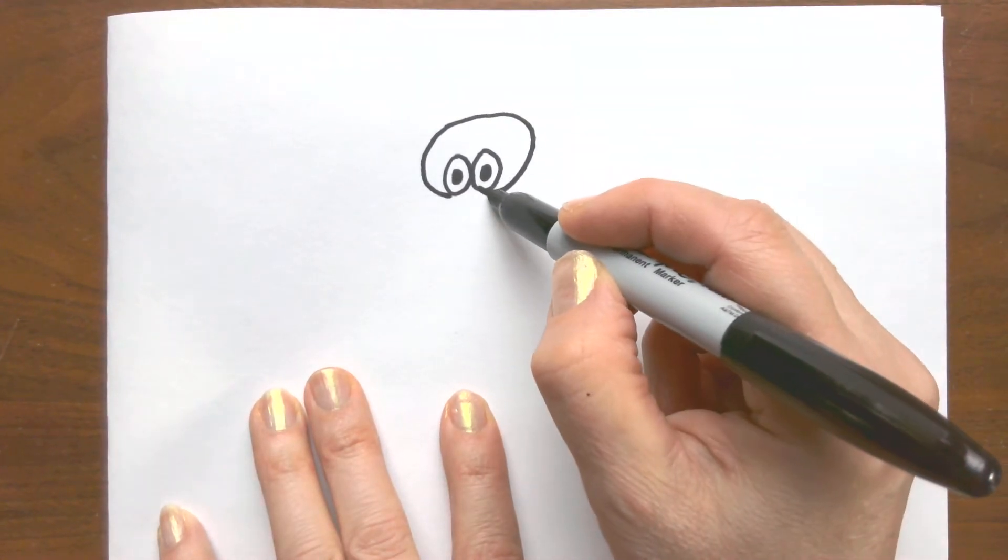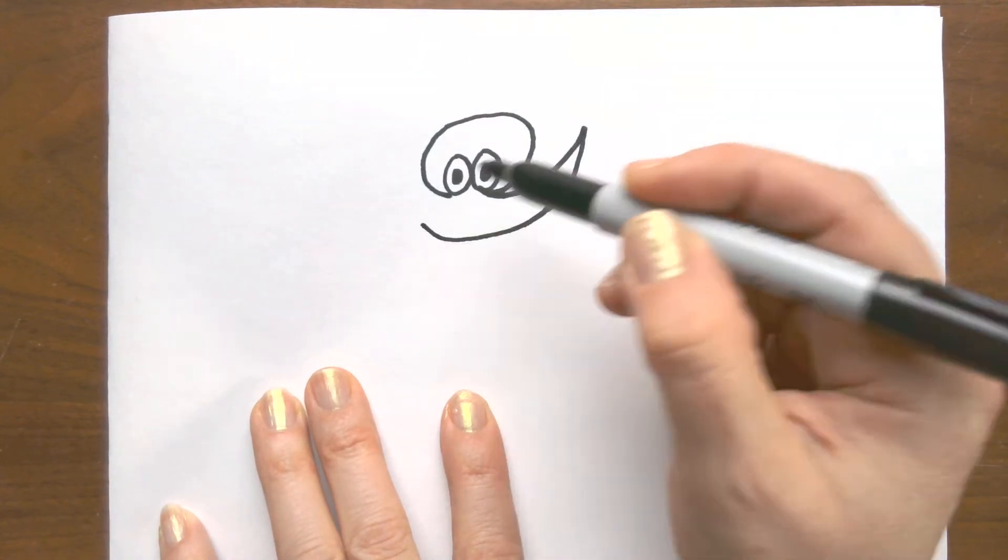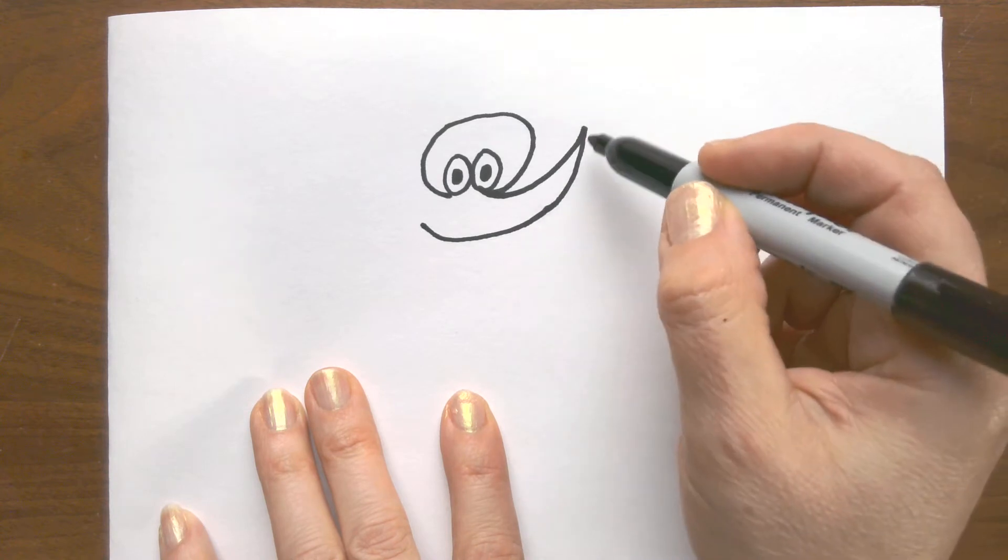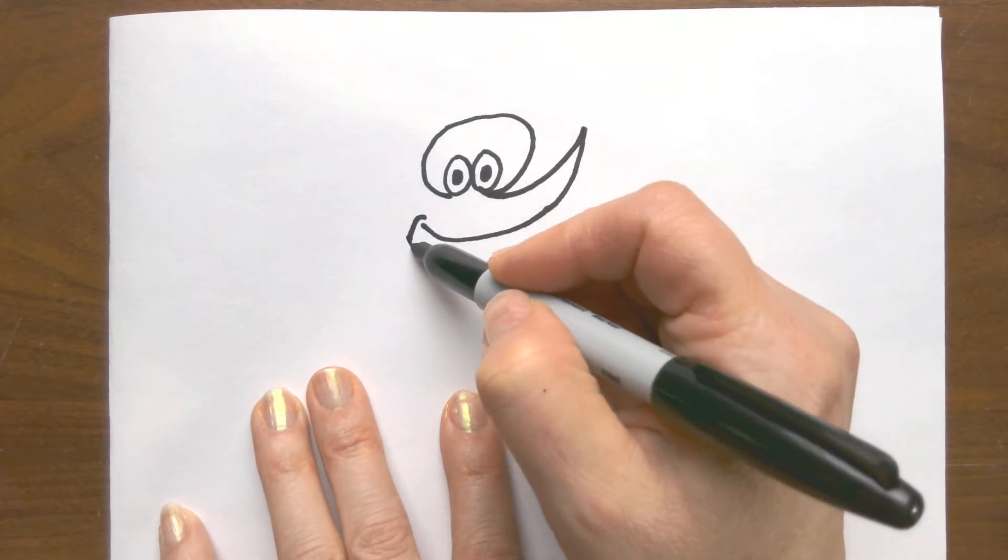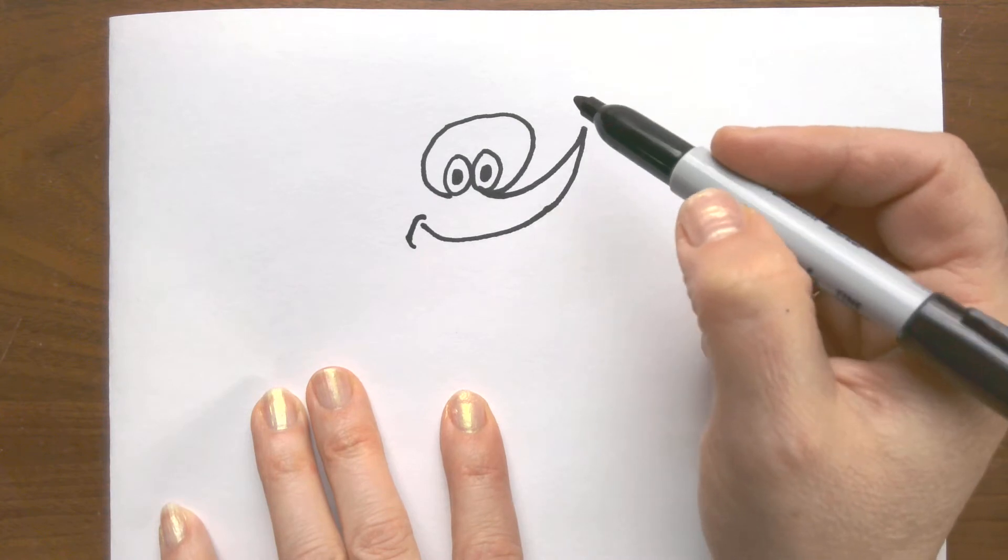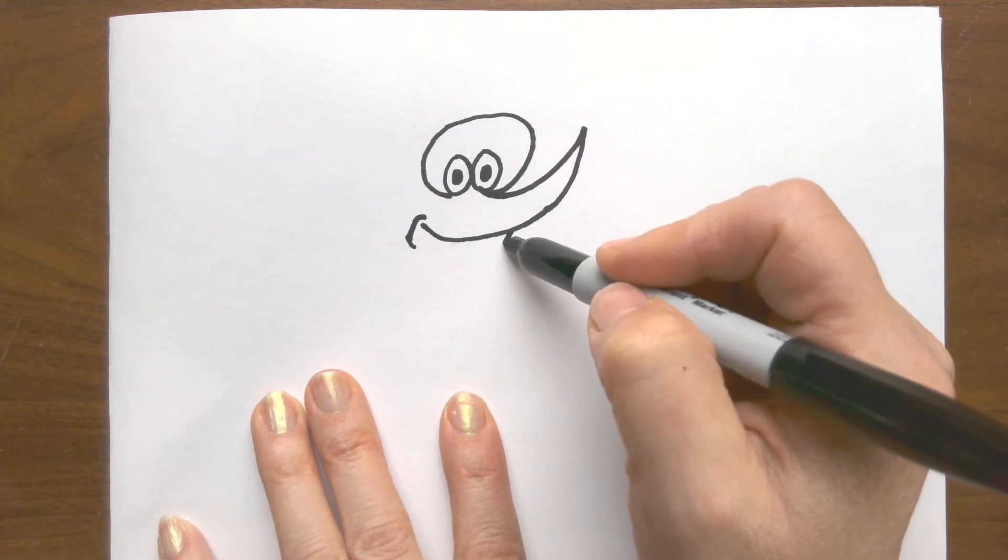This is going to be his mouth, so I'm drawing a line there. It looks like he's smiling. Then I'm drawing a curved line down to here and back up to there.